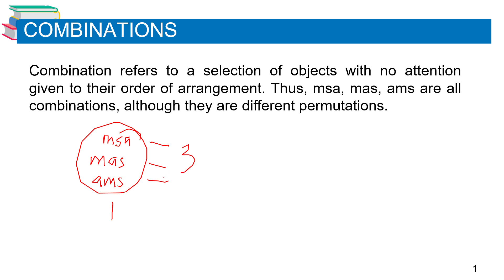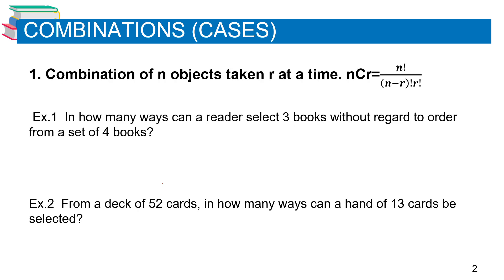There are cases to be followed in combination. The first case is the combination of n objects taken r at a time. The formula is: nCr equals n factorial over (n minus r) factorial times r factorial.